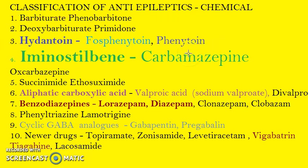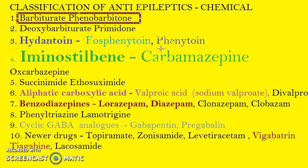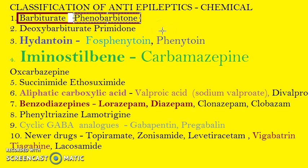One more class to focus on: barbiturates — phenobarbitone. Barbiturates tend to appear wherever benzodiazepines are, they kind of go hand in hand. So remember barbiturates — example: phenobarbitone.